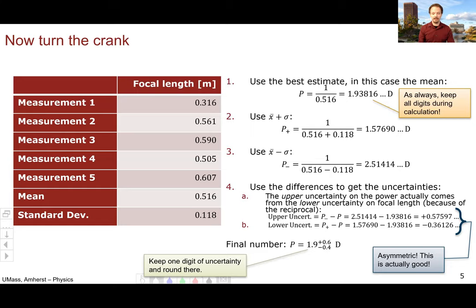So a couple things to point out. One, we're only keeping one digit of uncertainty and rounding our value at that number of digits. And we have asymmetric uncertainties. And this is how we write asymmetric uncertainties. We do the plus and the minus. If you look in research papers, you'll see numbers like this all the time.